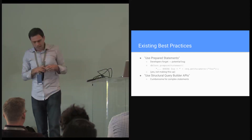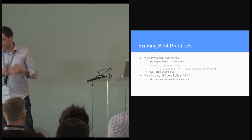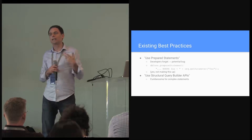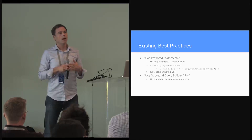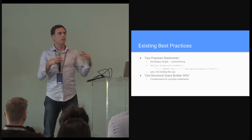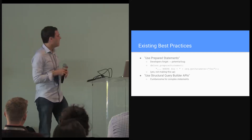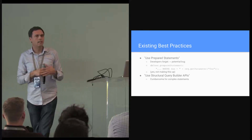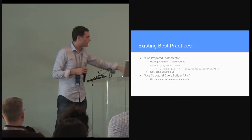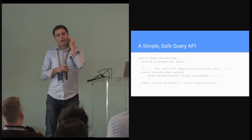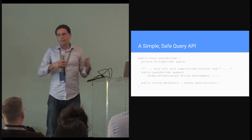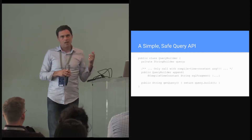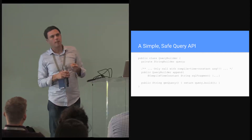The other approach we ask developers to consider is using structural query builder APIs like Hibernate's Criteria, where you use a programmatic API to assemble the structure of the query — which is also inherently safe from injection. Unfortunately, that's also pretty cumbersome. For a more complex query, this gets quite tedious as opposed to the convenience of writing SQL. So the question is: can we come up with an API that allows developers to still build queries from string concatenation but in a way that prevents the introduction of injection vulnerabilities?